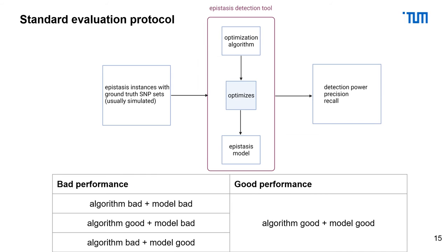So if your evaluation results in a good performance, you know that the optimization algorithm and the statistical model are both good. But in the event of a bad performance, you cannot distinguish whether the algorithm or the model was bad.